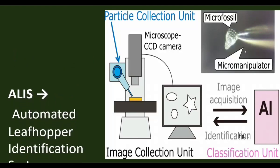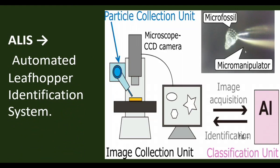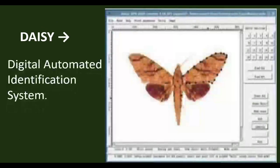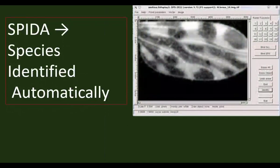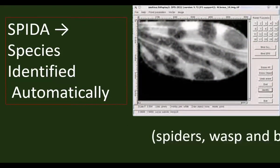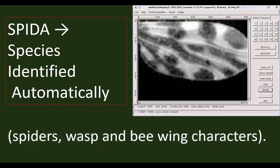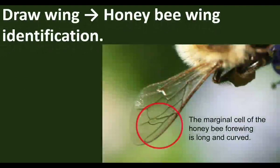ALICE stands for Automated Leaf Hopper Identification System, and it is mainly used for identifying invertebrate species. DAISY is also an automated identification tool. SPIDER is used for automatically identifying spider species, as well as wasps and bee wing characters. DRAWWING is a tool used for honey bee wing identification — it identifies the pattern of honey bee wings.